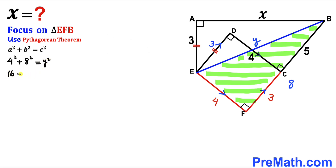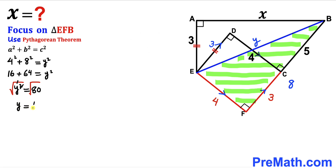Simplifying: 16 + 64 = y², so y² = 80. Taking the square root of both sides, the square and square root undo each other, so y = √80.